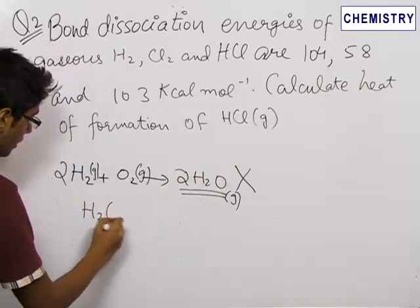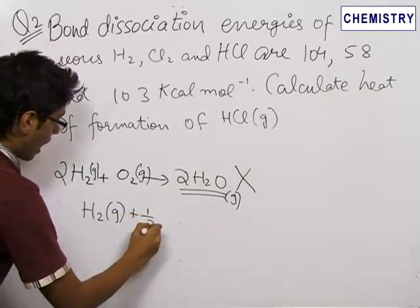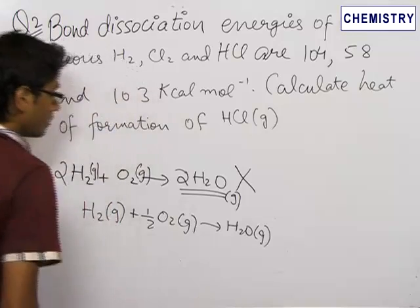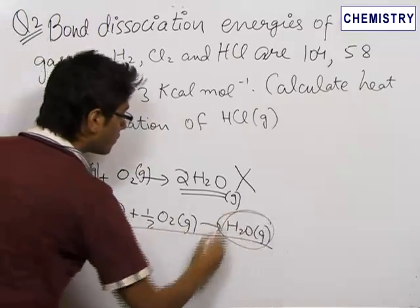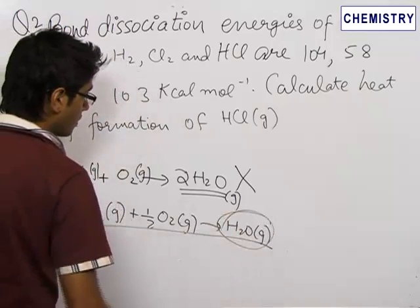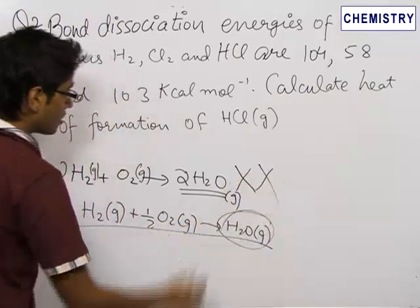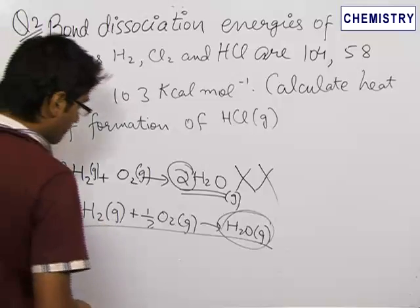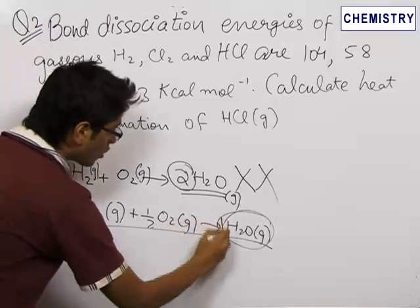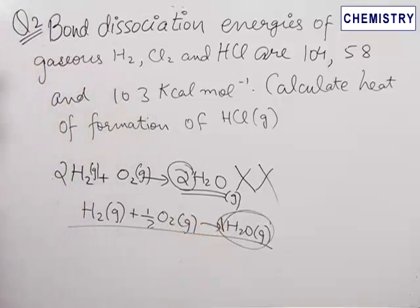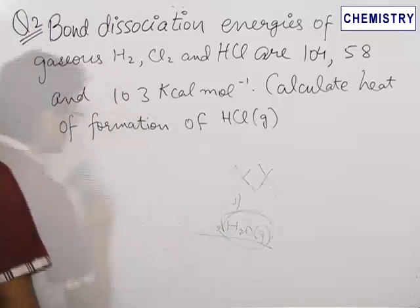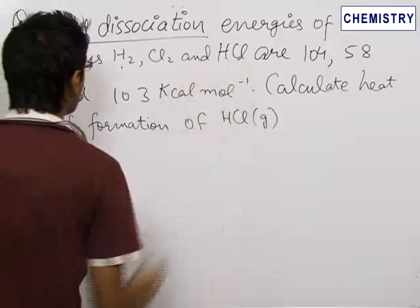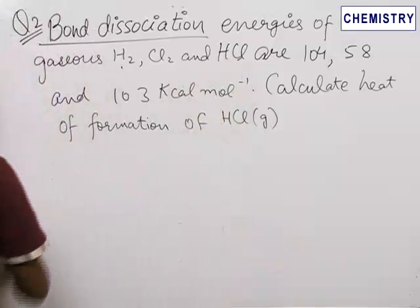Rather, H₂(g) + ½O₂(g) → H₂O(g) — this is the heat of formation of water in the gaseous state. Remember, one mole of a compound must be formed in the reaction for it to be the heat of formation. Now we are given the bond dissociation energies of H₂, Cl₂, and HCl, so we write the equations for their dissociation.